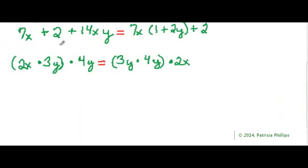7x plus 2 plus 14xy equals 7x times 1 plus 2y plus 2. So are there any terms the same on the left and right side of the equal sign? And the fact of the matter is two of them are the same. You have the 7x on the left. You have 7x on the right. You have 2 on the left. You have a 2 on the right. So what happened? Well, what happened was, and it's kind of hard to see it because it's already been distributed. But the 7, in the first example, the 7 was distributed. It was distributed into this 1 and it was distributed into this 2y. So you have to think backwards.